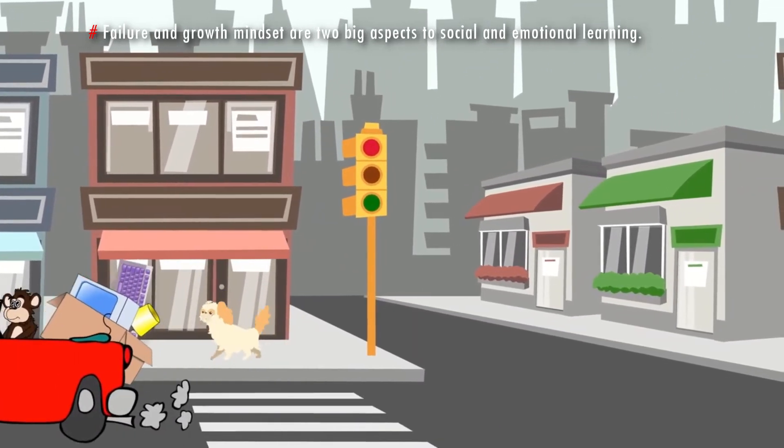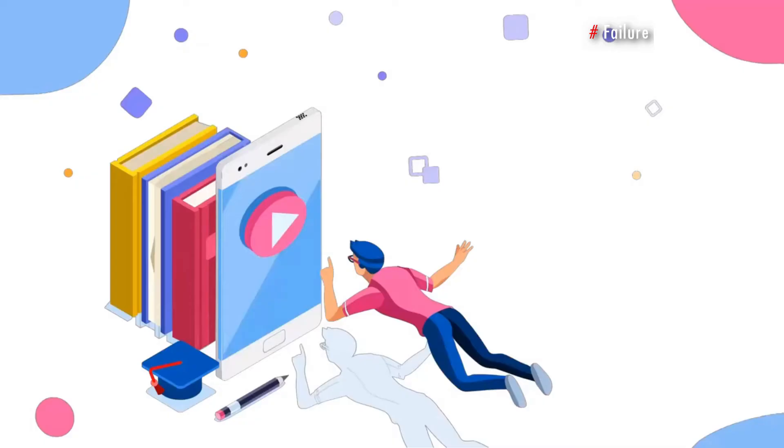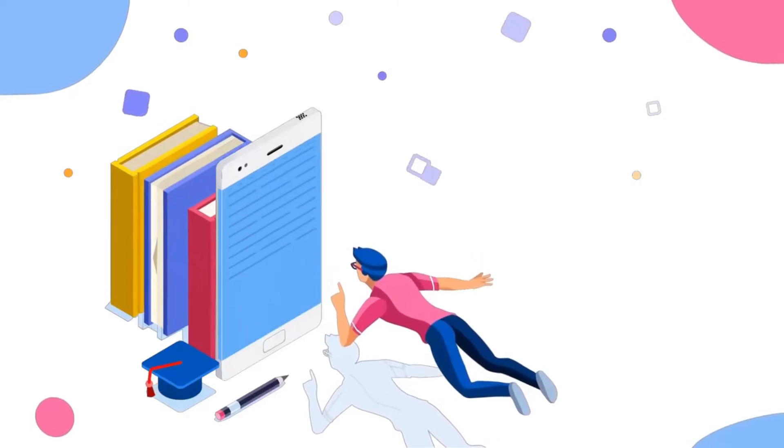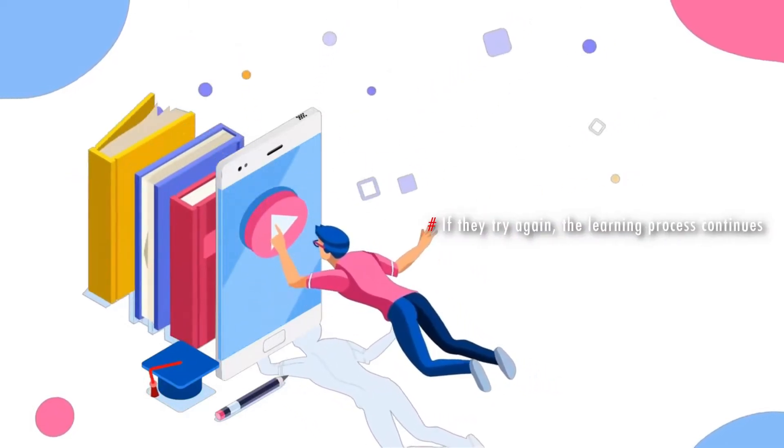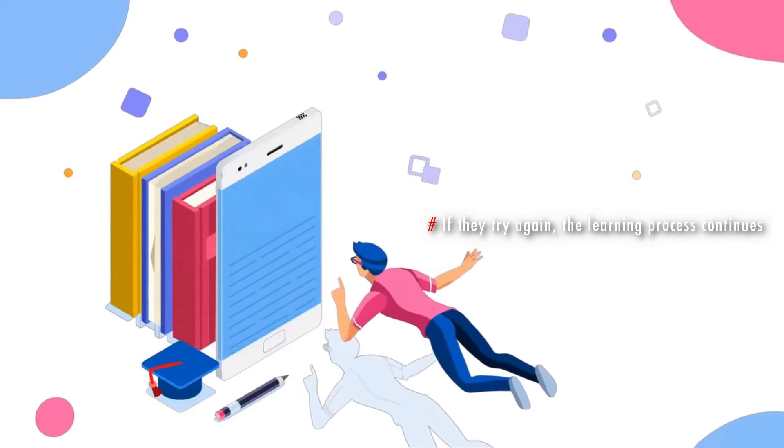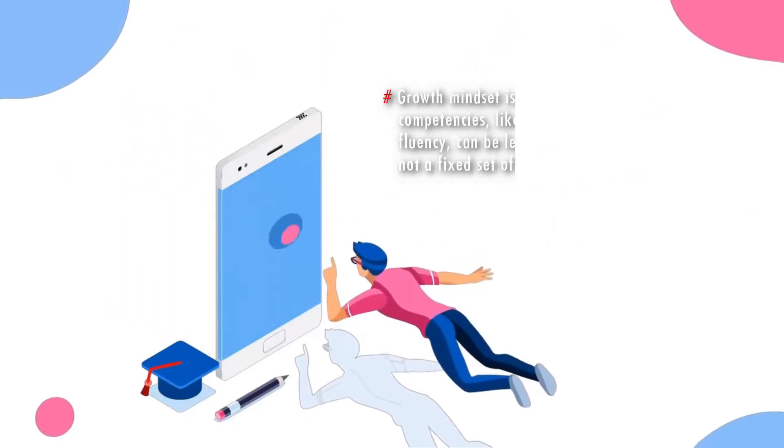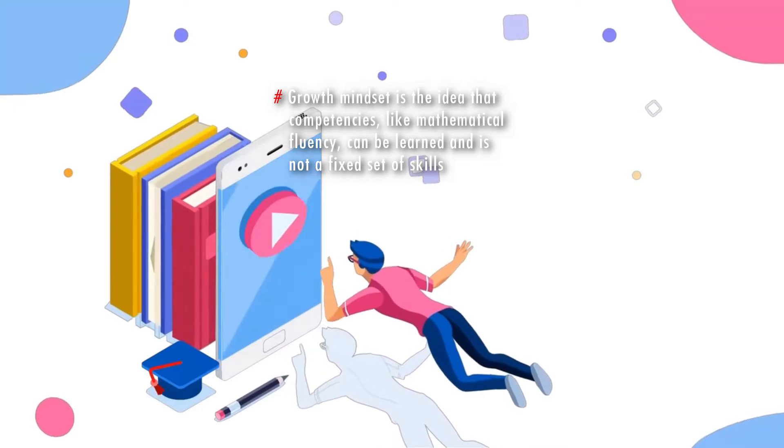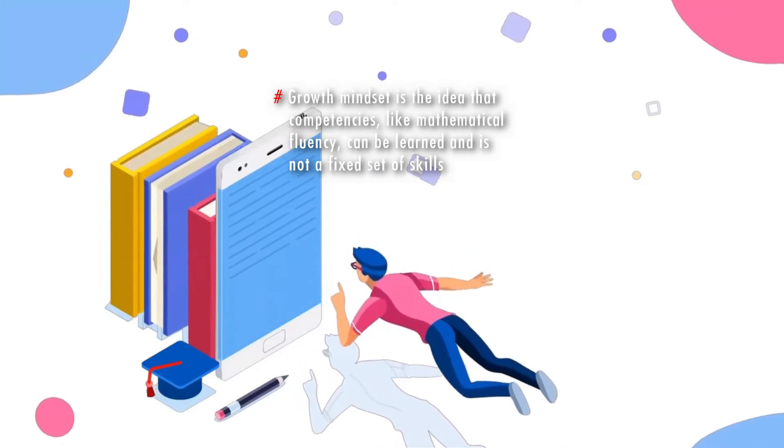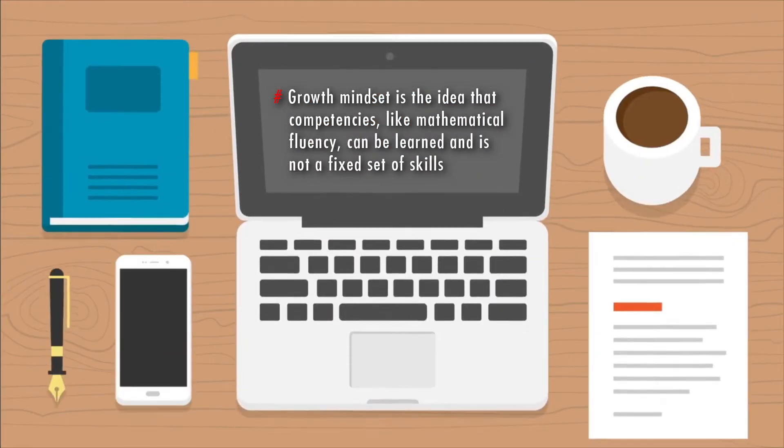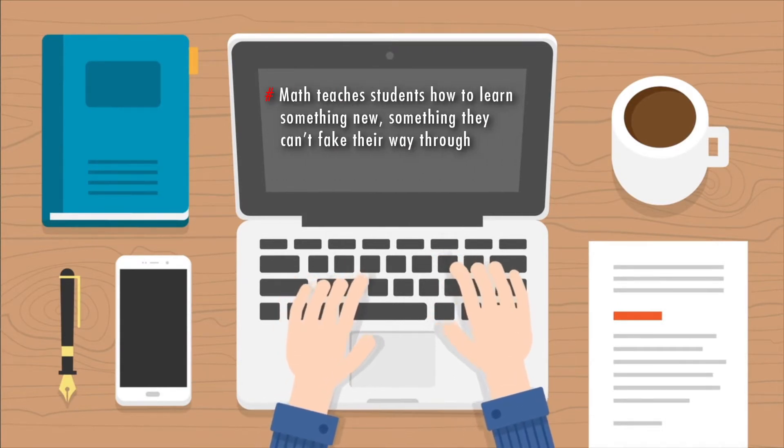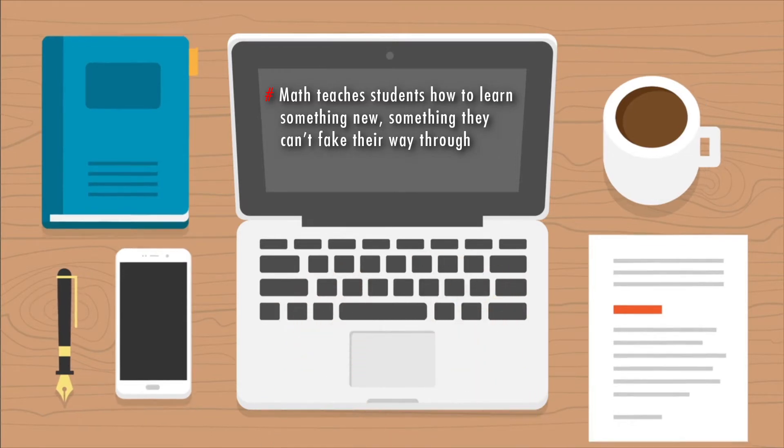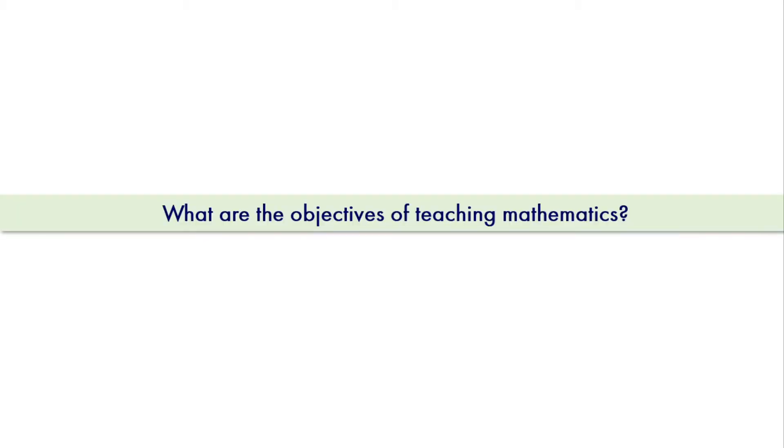Math students learn pattern-seeking and logical thinking. These skills can be used in every job out there. Failure and growth mindset are two big aspects to social and emotional learning. When students fail at something, they can try again or give up. If they try again, the learning process continues. Growth mindset is the idea that competencies like mathematical fluency can be learned and is not a fixed set of skills. Math teaches students how to learn something new, something they cannot fake their way through.